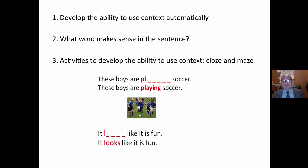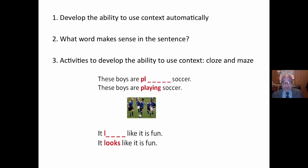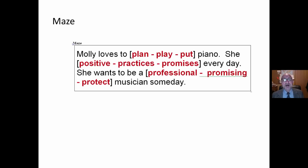Two simple activities to develop this ability to use context clues automatically are cloze and maze. Cloze is simply a sentence with one word missing. With younger students we provide beginning letter clues. This takes anywhere between three and six minutes a day — quickly. The goal is to develop automaticity.